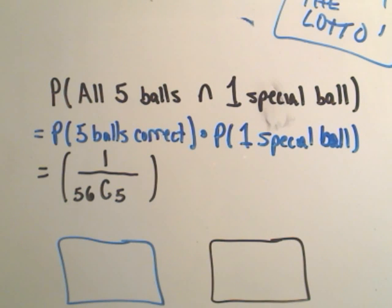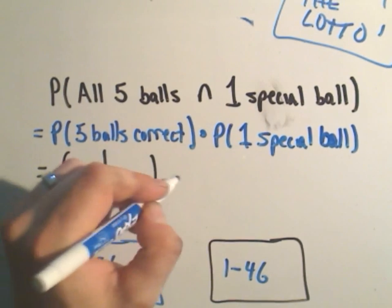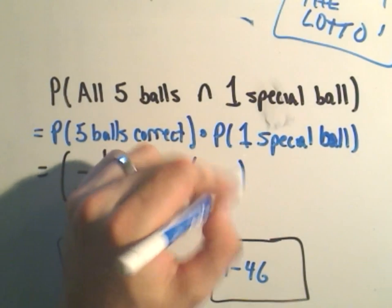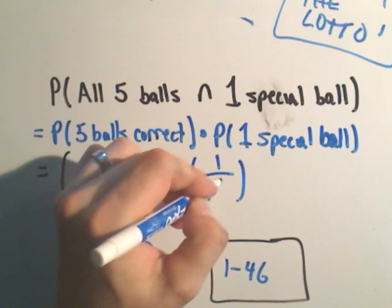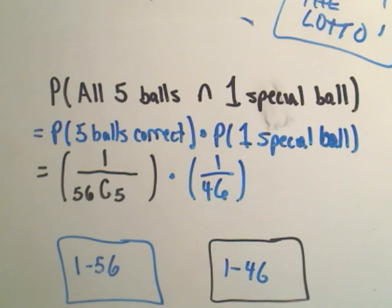And then we also have to pick this one special ball correctly. And remember there were only 46 choices. Since I only have one pick, there's just a 1 in 46 chance of me picking that one correctly.